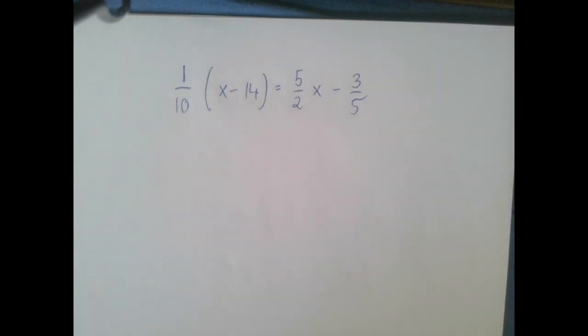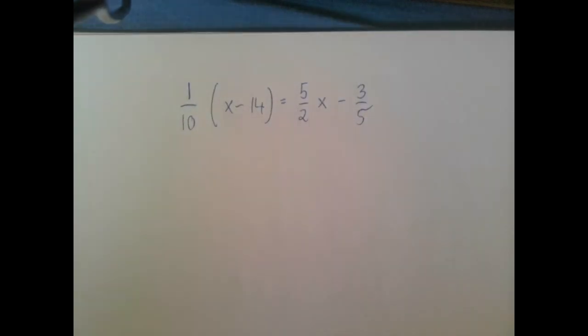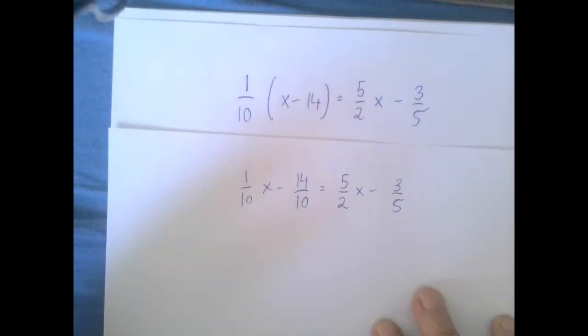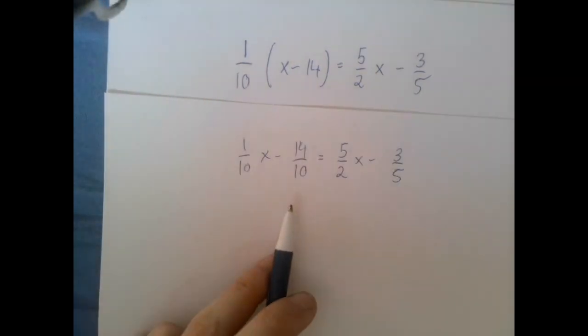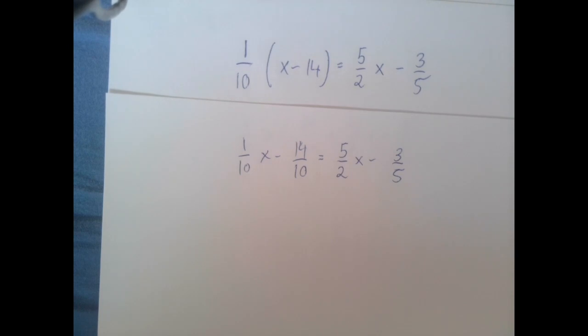That's method number one. So let's see that. First we're going to distribute 1 over 10 and notice at this point, keep it at the back of your mind that 14 over 10 can be simplified to 7 over 5. That might make our life easier or we need a common denominator of 10. Either way, just keep an eye on it.